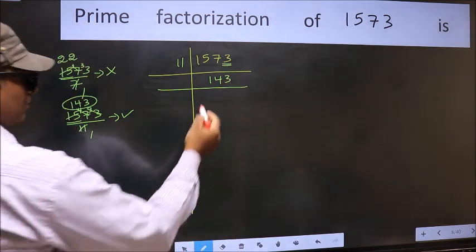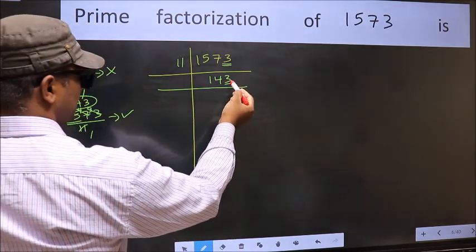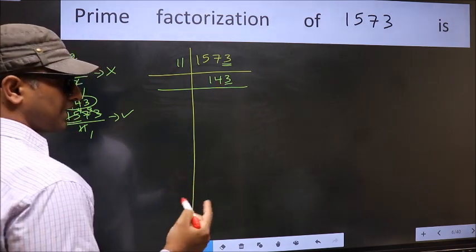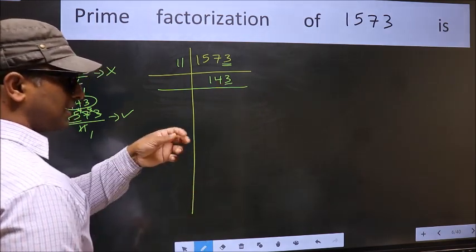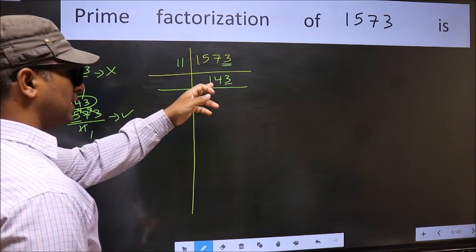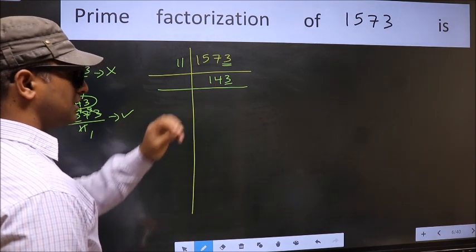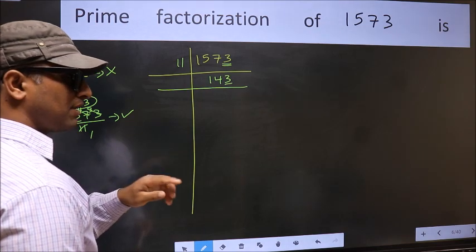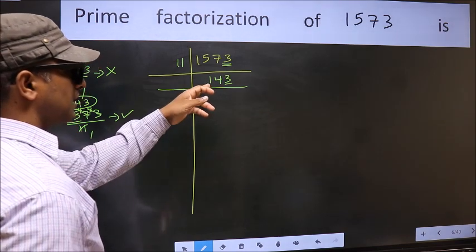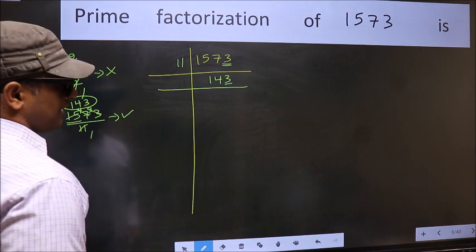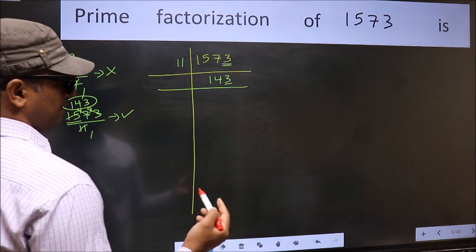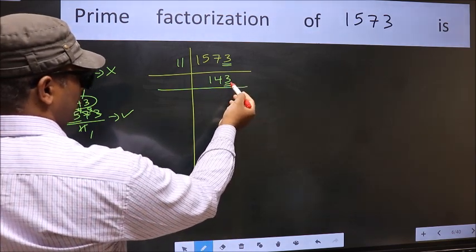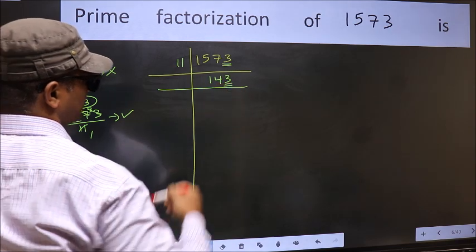Next, for 143: the last digit 3 is not even, so not divisible by 2. To check divisibility by 3, add the digits: 1 plus 4 plus 3 equals 8. And 8 is not divisible by 3, so this number is also not divisible by 3. The last digit is neither 0 nor 5, so this is not divisible by 5.